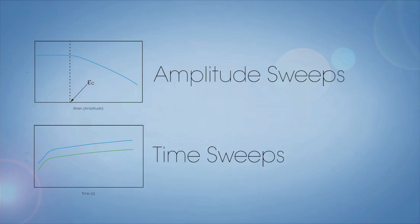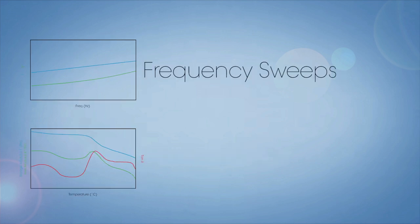Typical tests with this configuration include amplitude sweeps to determine the linear viscoelastic region, time sweeps to determine stability, frequency sweeps to determine viscoelastic properties, and temperature ramp or sweeps to determine thermal transitions, measure modulus, and collect TTS data for master curve generation.